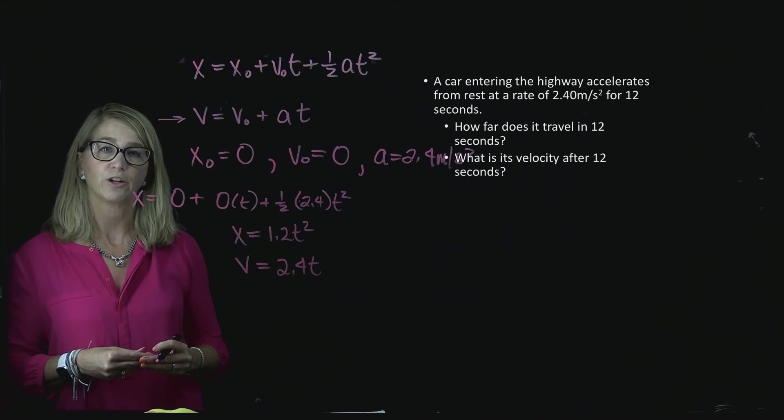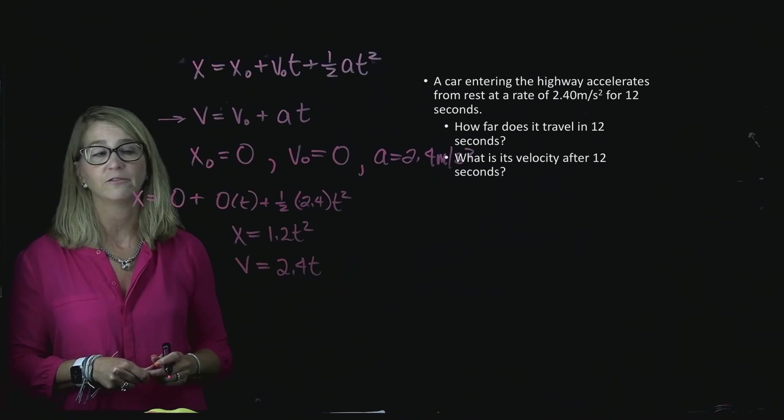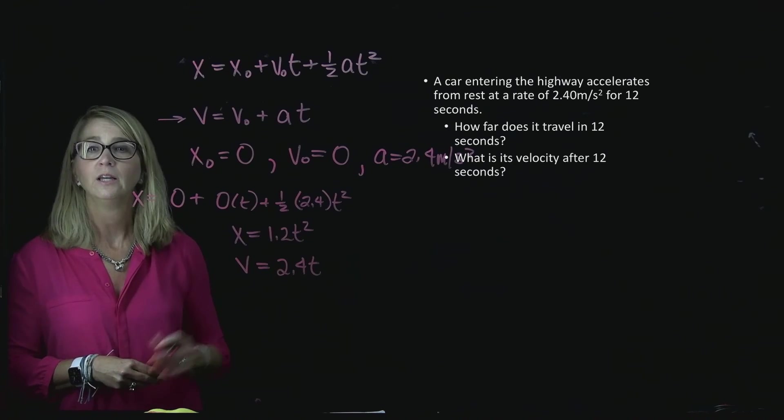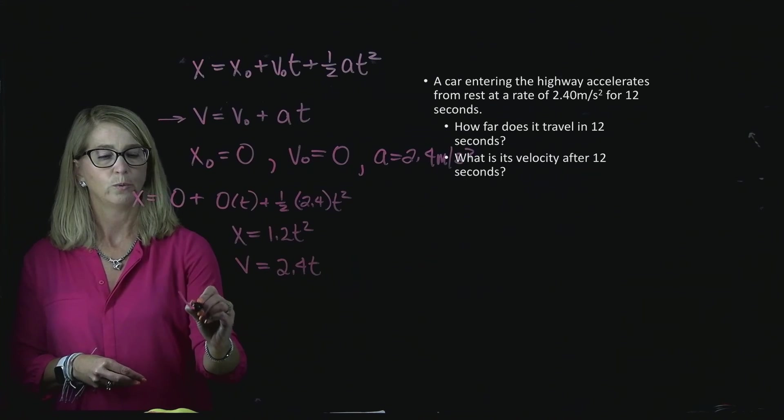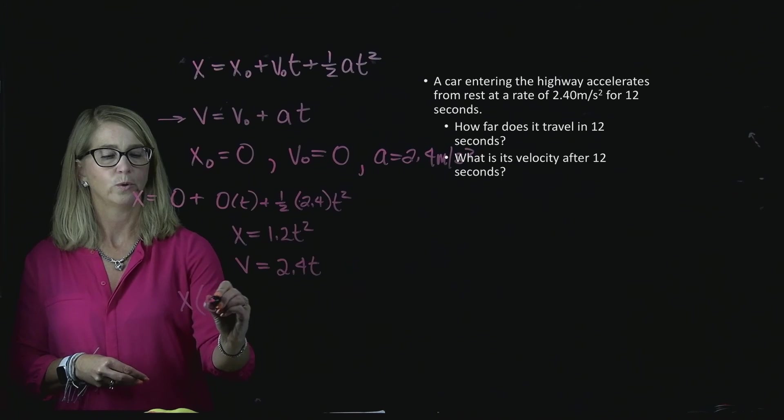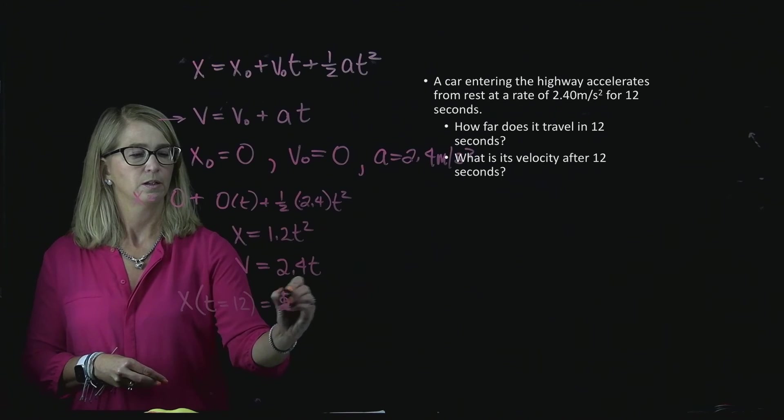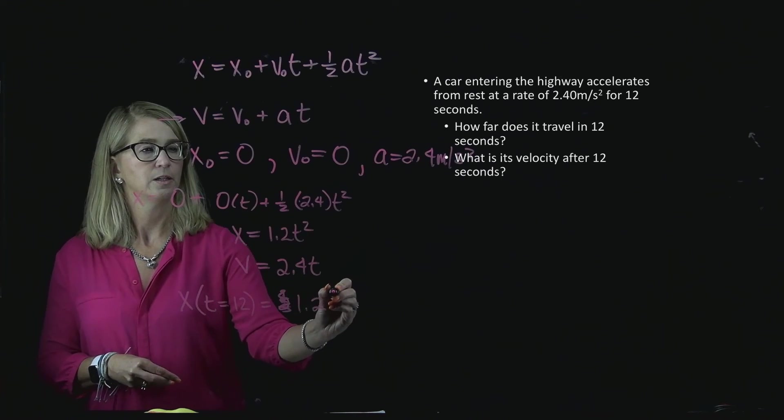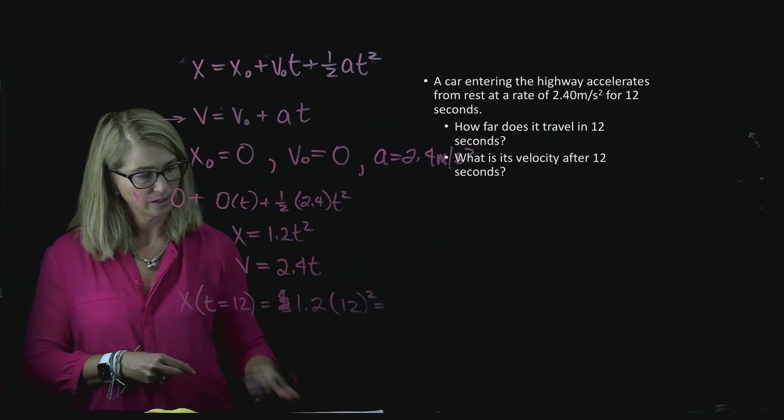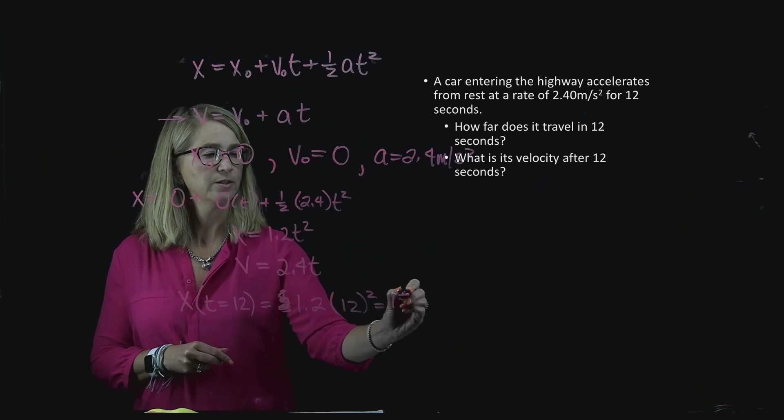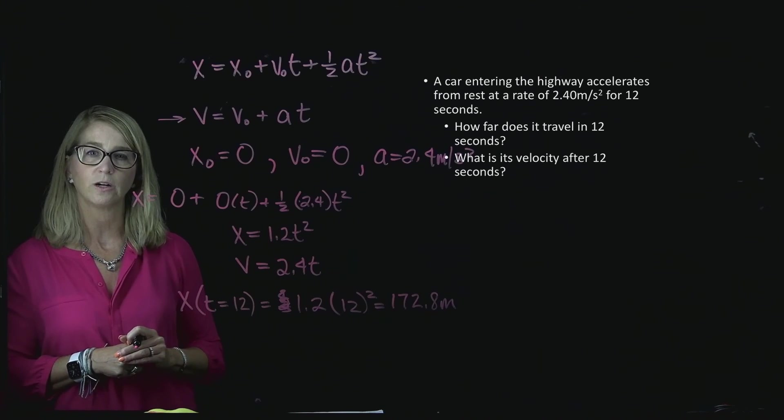Now, how am I going to use those expressions to answer the question? This question is pretty straightforward, because it's asking, first of all, how far did it go in 12 seconds? It wants to know its position after 12 seconds have passed. So, we could think of it as x with the t equal to 12, and so it's going to be 1.2, sorry, that's just times 12 squared. And I worked this out already, and that's 172.8 meters. So, that is how far it traveled in 12 seconds.